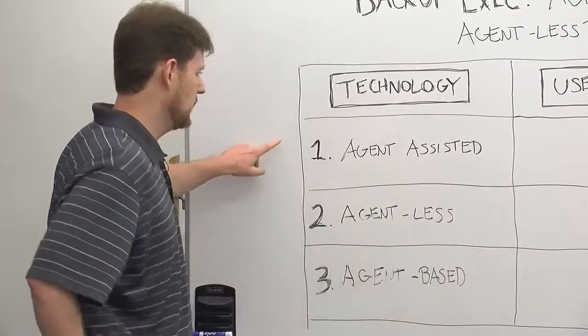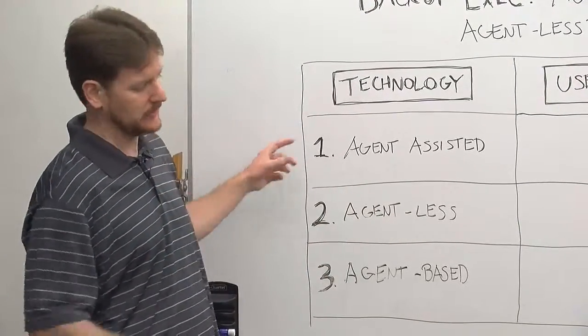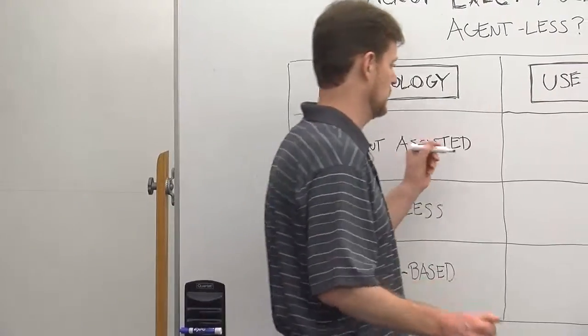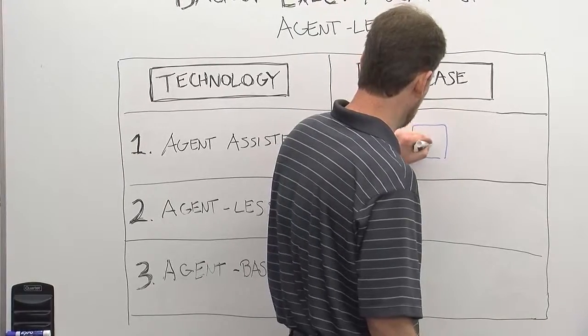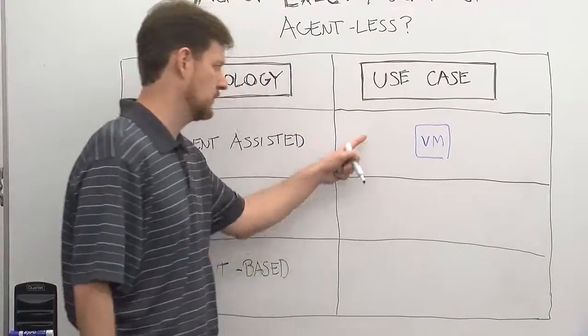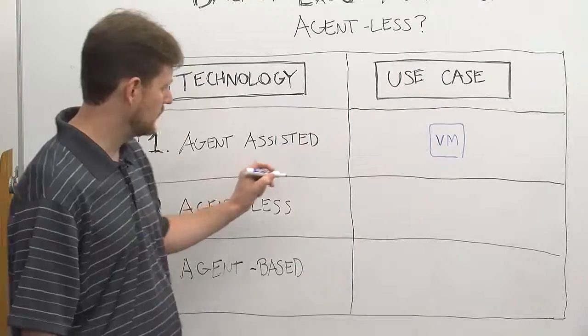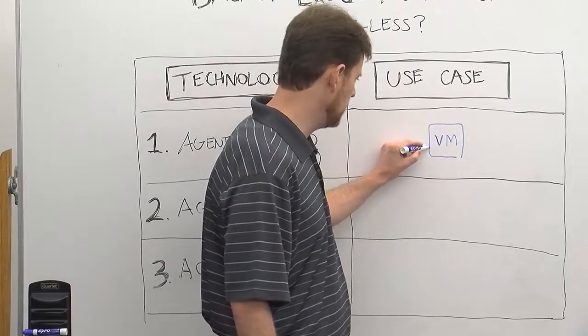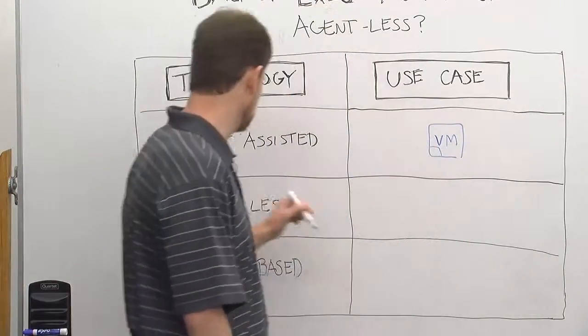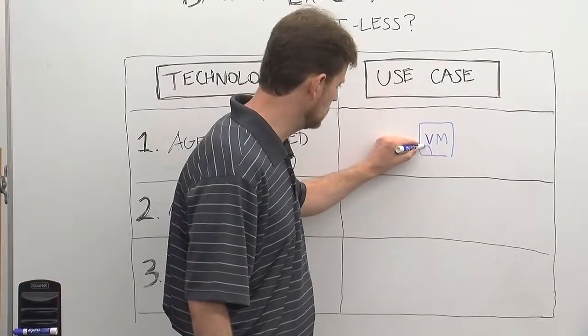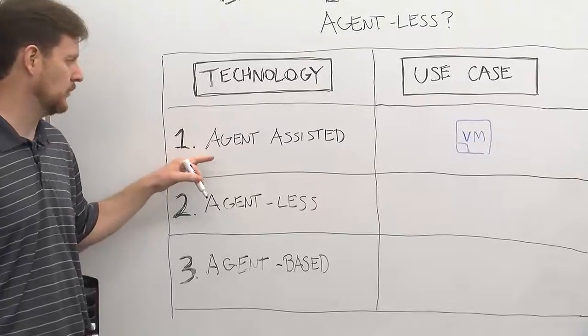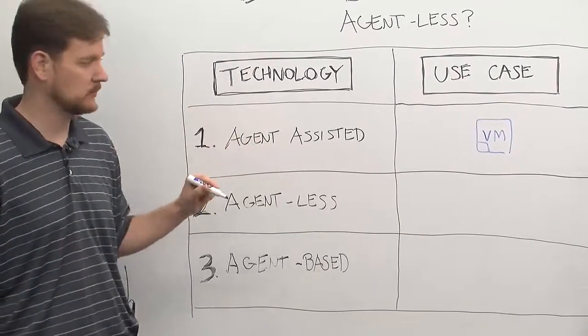So we'll start up here. Agent-assisted means you actually have an agent within a virtual machine. This could be a VMware virtual machine or a Hyper-V virtual machine. You have an agent here that only helps in the backup process but is not the data mover. This is used primarily for virtualized applications.